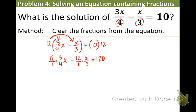Now, let's multiply on the left side. The 12 and the 4 can be reduced. 12 divided by 4 is 3, so the 4 becomes a 1 and the 12 becomes a 3. For the second term, 12 divided by 3 is 4, so the 3 becomes a 1 and the 12 becomes a 4. Now, let's just multiply 3 times 3 is 9x and then minus 4x equals 120.